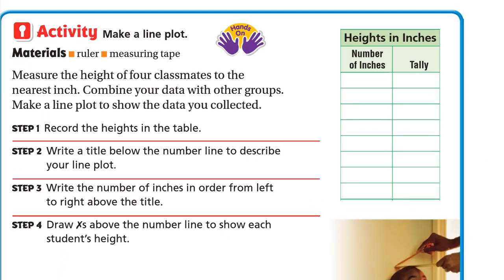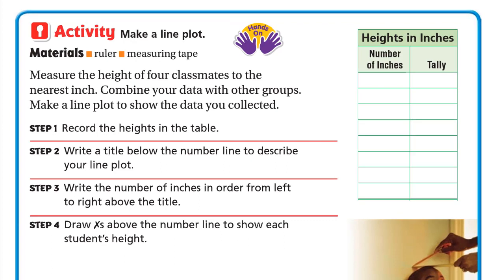The next activity is actually an in-class activity, so you will need a ruler and measuring tape. Measure the height of four classmates to the nearest inch, combine your data with other groups, and make a line plot to show the data you collected.